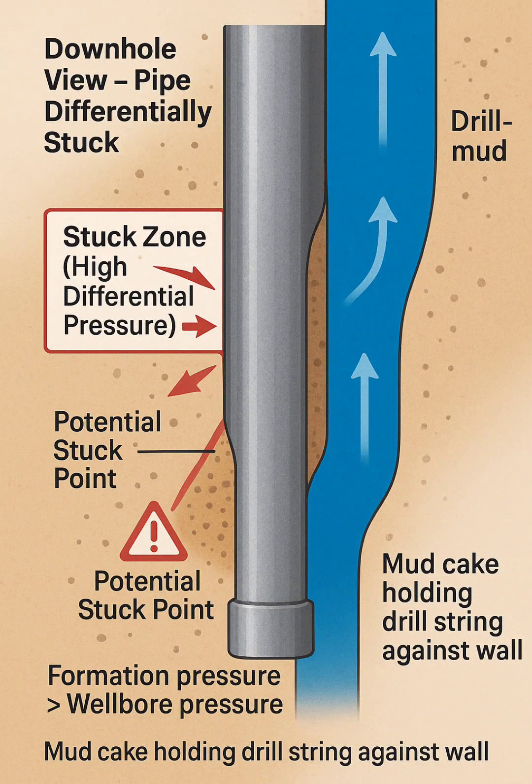Drilling mud (blue area): The mud circulates freely on the other side of the pipe. The blue upward arrows show smooth annular flow, indicating no blockage on that side.